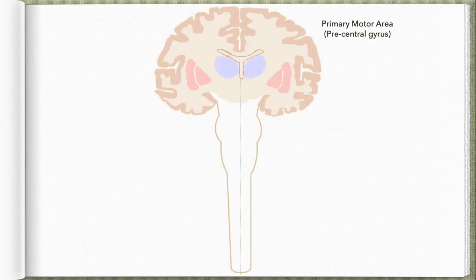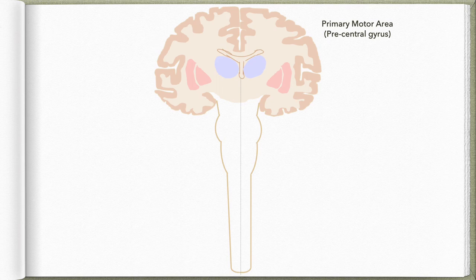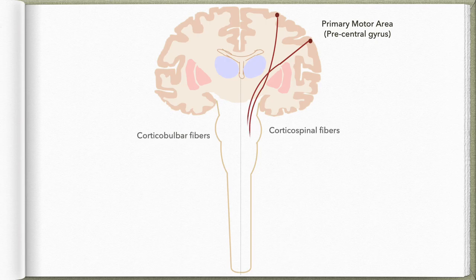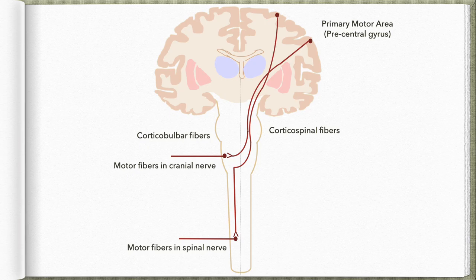Both corticospinal and corticobulbar tract fibers start from the designated body-represented areas of the primary motor cortex, called the motor homunculus, as well as adjacent cortical areas. They descend through the internal capsule, transit through the brain stem where they cross to the opposite side, and synapse either directly with the alpha motor neurons or indirectly via interneurons.